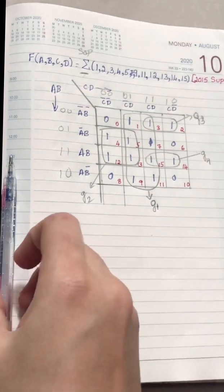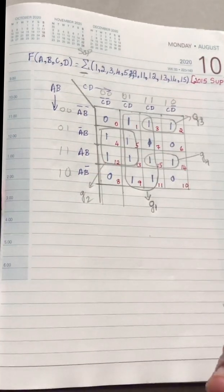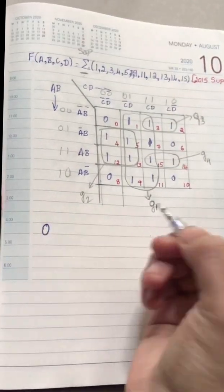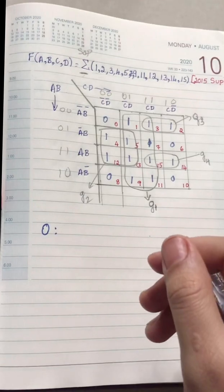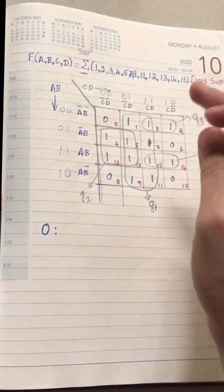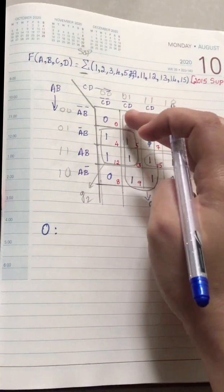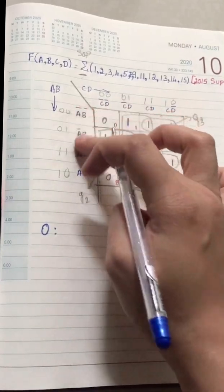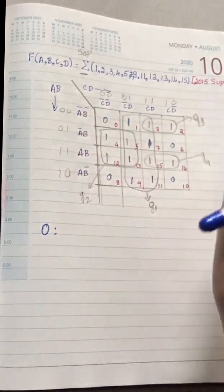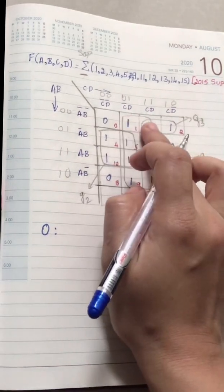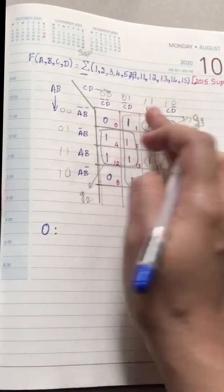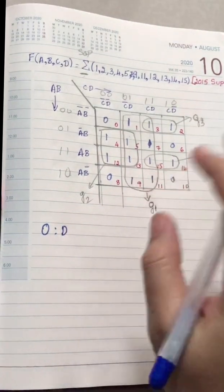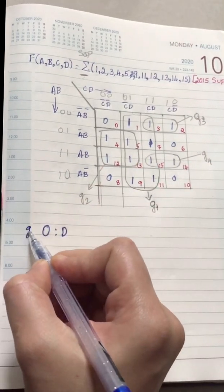Next step is to write the simplified expression. First, take the octal — Group 1. See which terms are common across all those squares. Here there are no common row terms, so leave those. Looking at the two columns covered, the common term is D. So for Group 1, you write D.